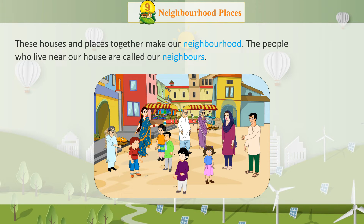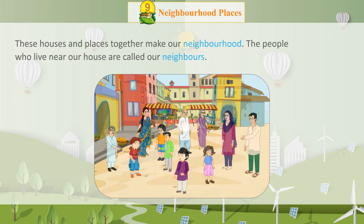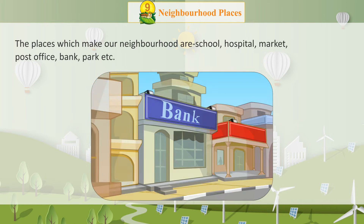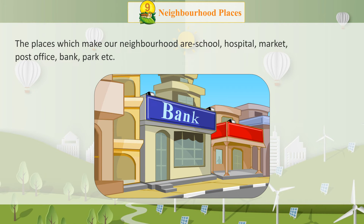People who live near our house are called our neighbours. Knowledge Window: Neighbours are the first persons to come to our aid. The places which make our neighbourhood are called: